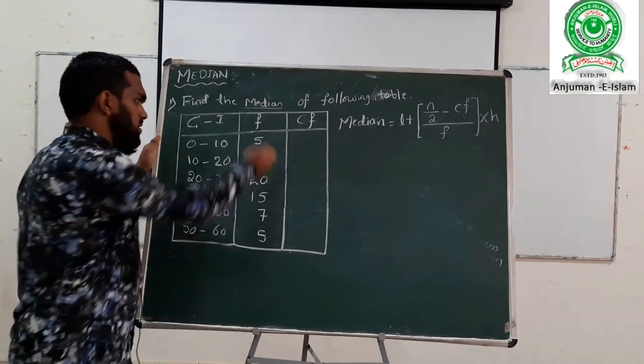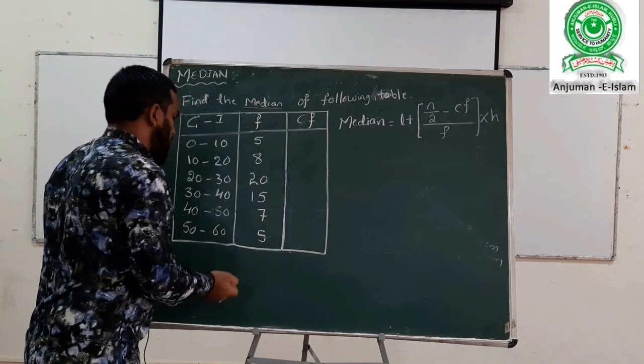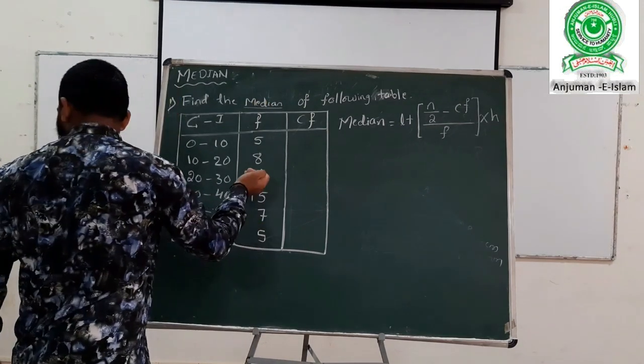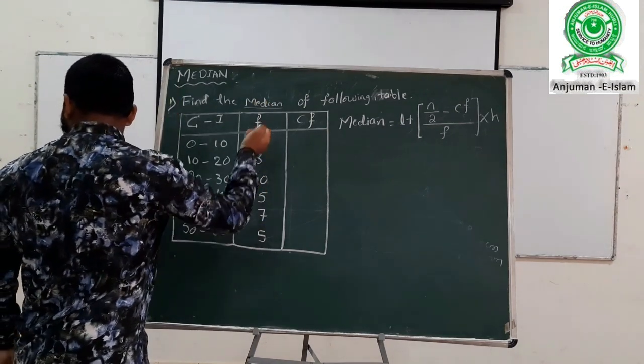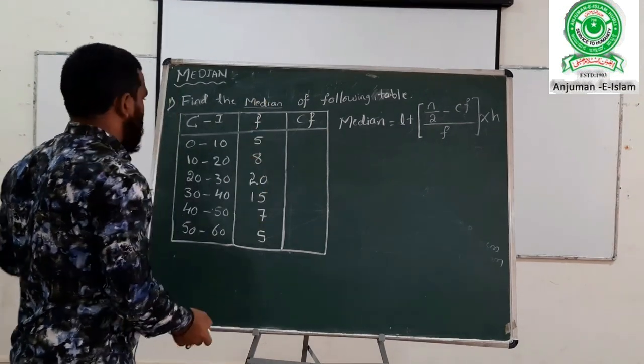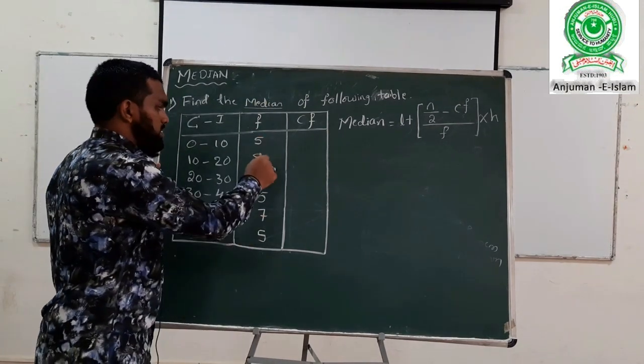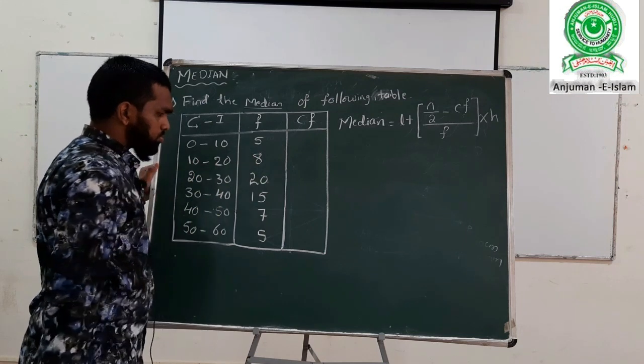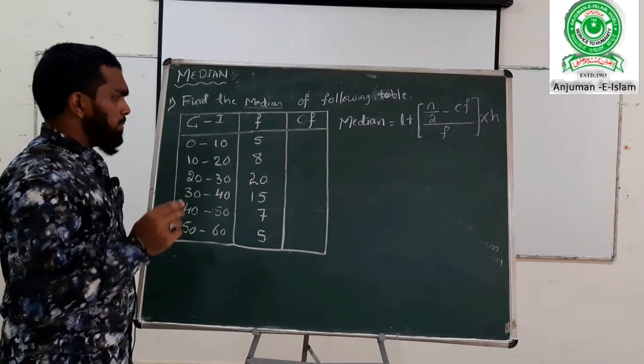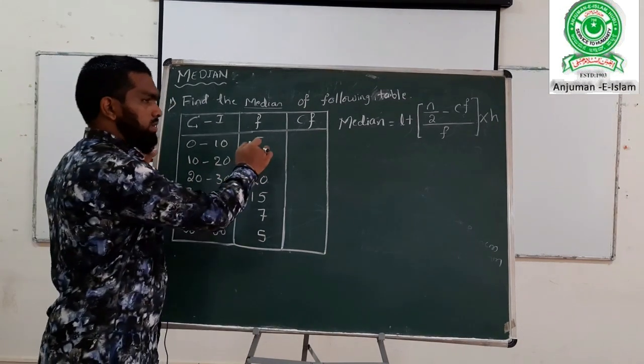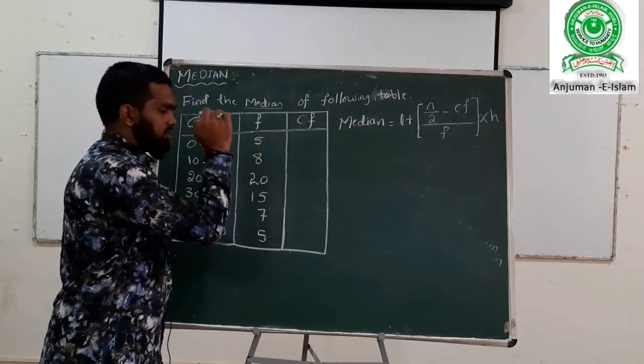N means number of observations. What is the number of observations? That is the sum of all frequencies. We add the frequencies: 5 plus 8 becomes 13.